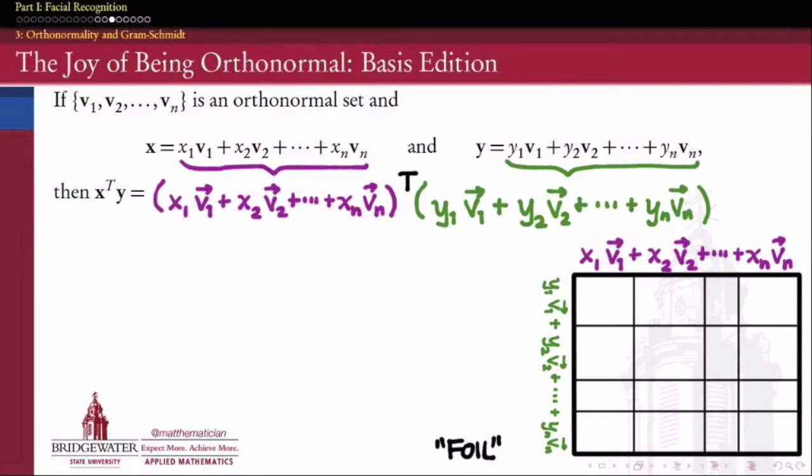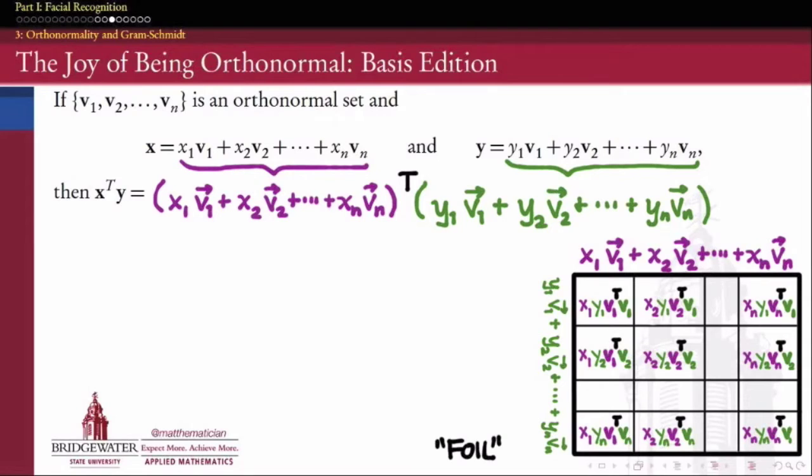So x1 v1 quantity transpose y1 v1 is going to give me x1 y1 v1 transpose v1, and so on and so forth. x2 y1 v2 transpose v1, and we'll fill in all these different foil components. This is one of those things that we'll only have to do once the long way, because we're going to realize in a second what makes this situation so special.